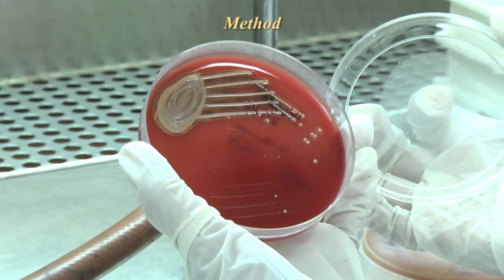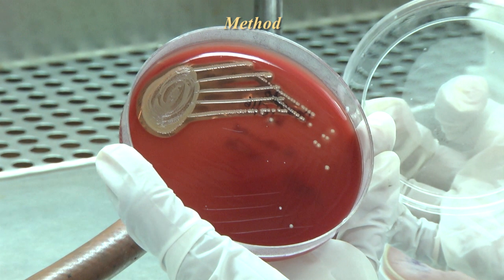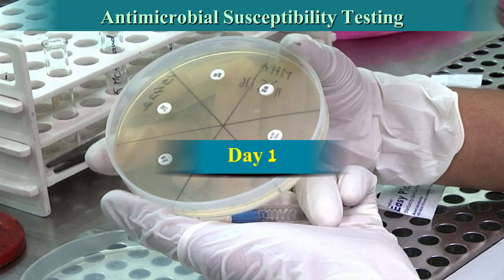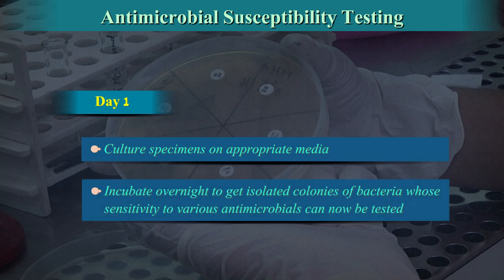Method: The prerequisite for any antimicrobial sensitivity test is the presence of isolated colonies of bacteria obtained from various specimens sent to the laboratory. Day 1: Culture specimens on appropriate media using techniques described in the earlier section on culture methods. Incubate overnight to get isolated colonies of bacteria whose sensitivity to various antimicrobials can now be tested.